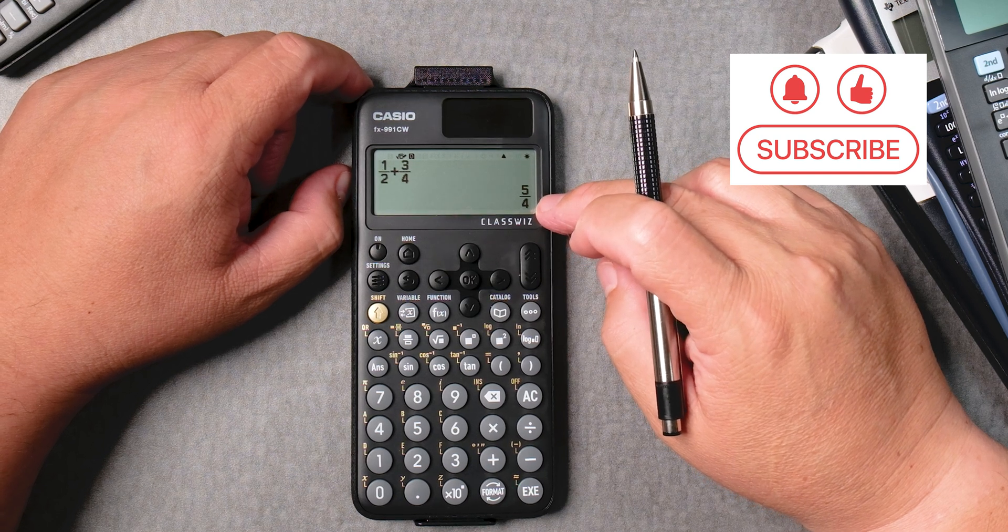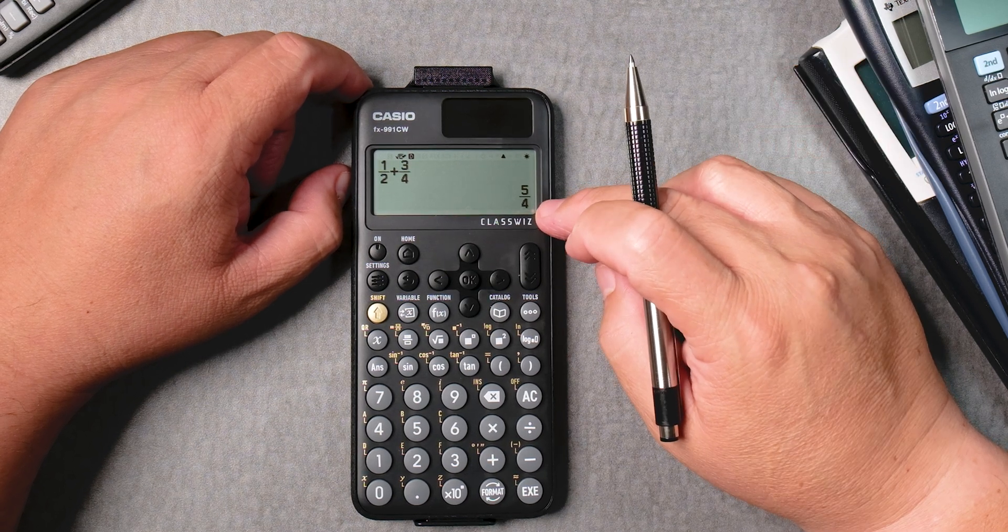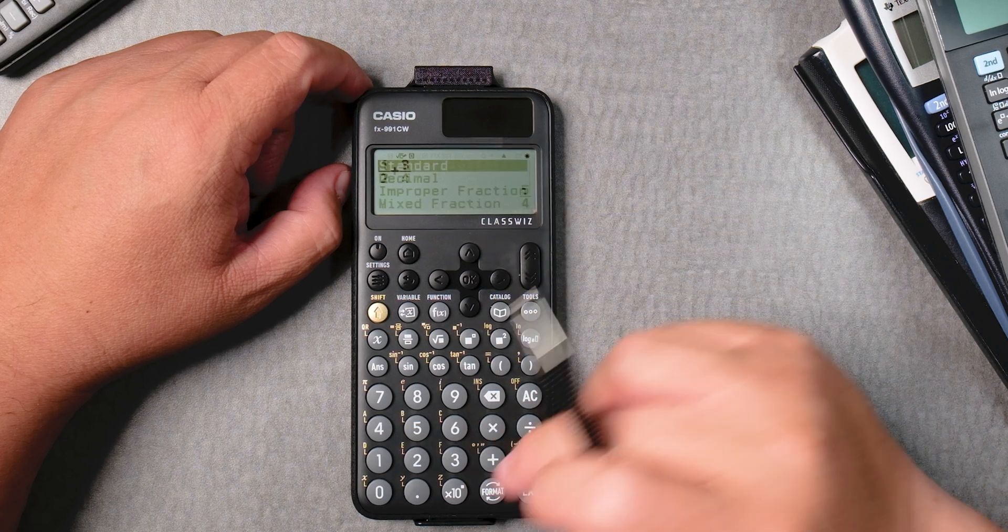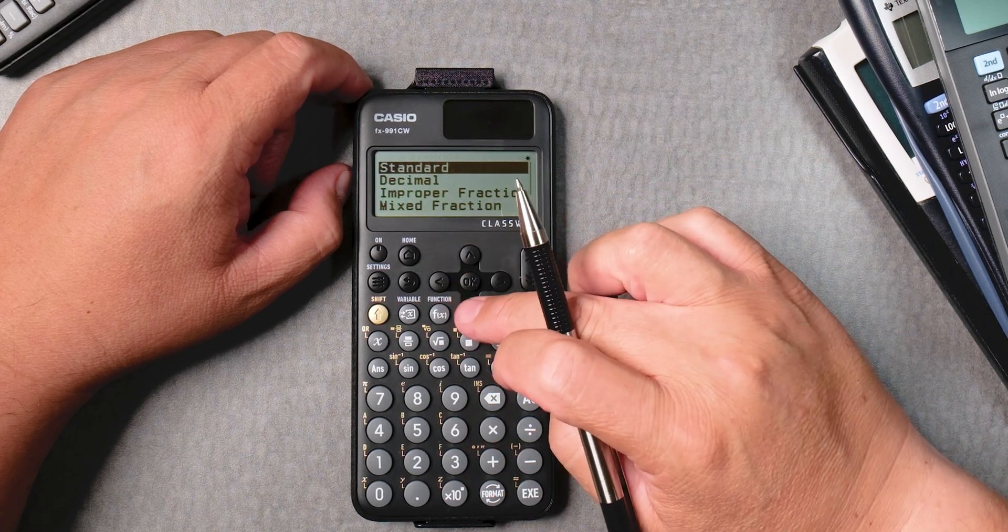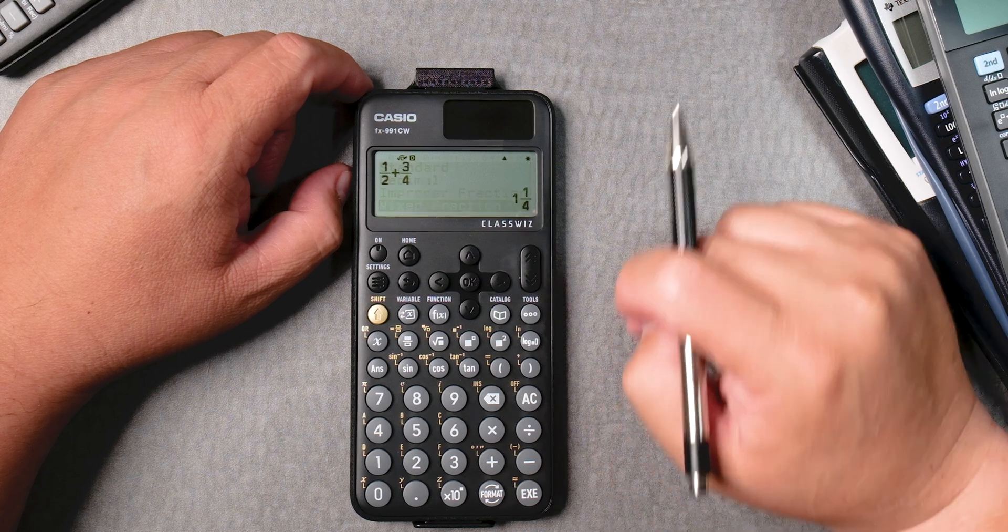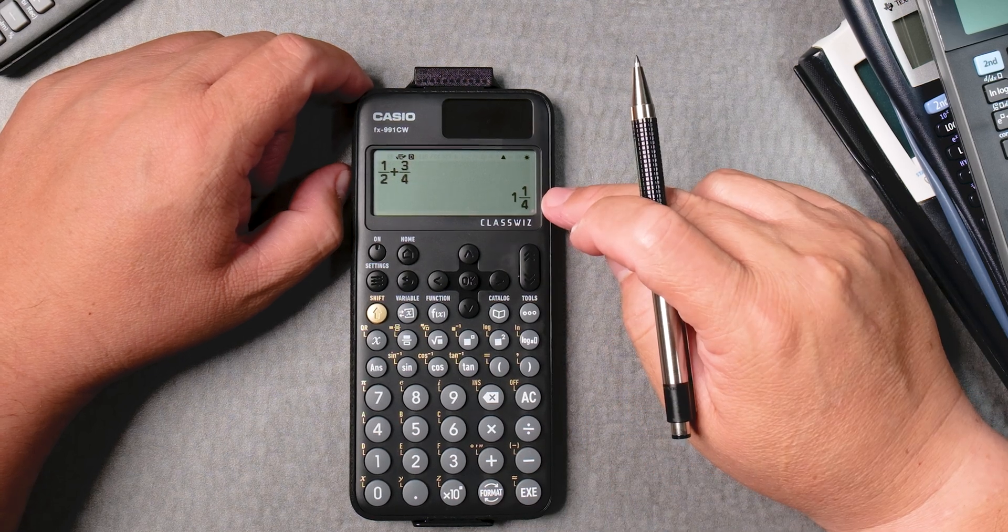Now that I have five over four, can I make it a mixed number? We click on format, we use these keys here, improper fraction, exe, and it changes it very nicely.